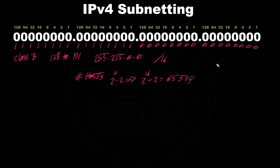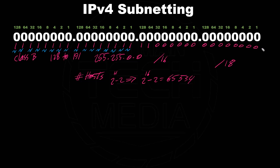Now let's talk about subnet bits. Let's say they give us a CIDR notation of /18 — so we know this is not a default subnet mask. 18 means 18 bits turned on going from left to right: 8 plus 8 is 16, then 17 and 18. So we borrow from the host bits. All the original default network bits remain network bits — 16 ones — and then we had 16 zeros. In this example, we borrowed two bits; those two bits are known as the subnet bits, and all the remaining zeros are the host bits.